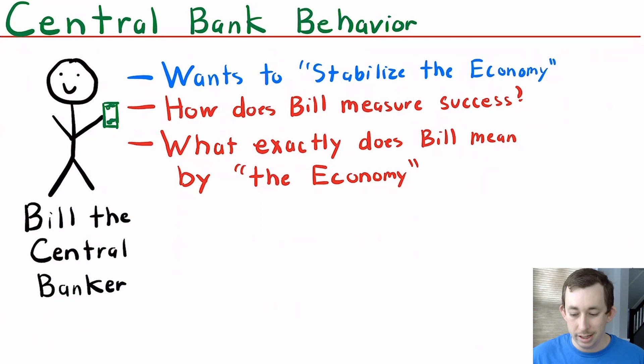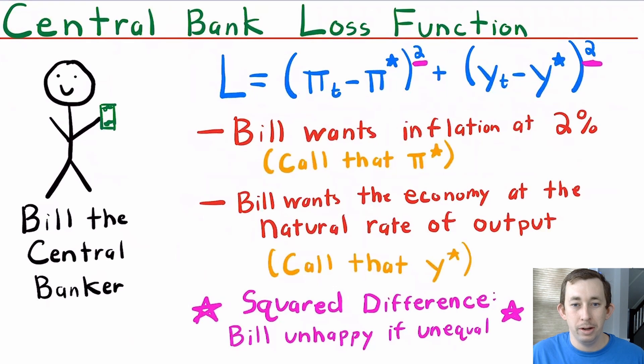Bill wants to stabilize the economy. So the questions we're asking with this loss function is: how exactly does Bill measure success? What exactly do we mean when we say Bill wants to stabilize the economy? Well, the way we can represent what Bill wants to do and the way Bill measures success is with this loss function L.